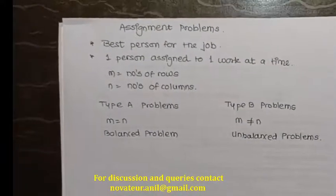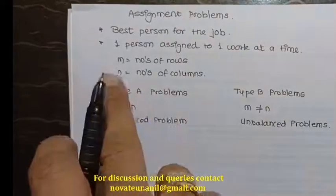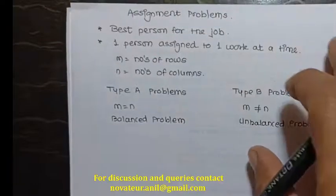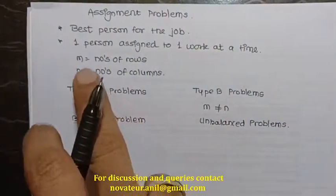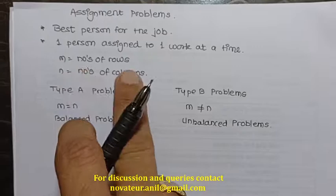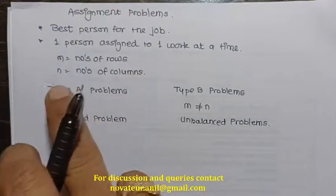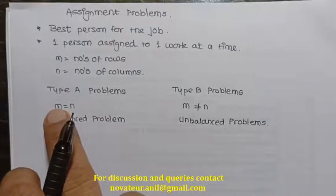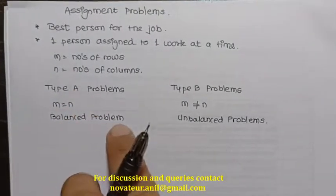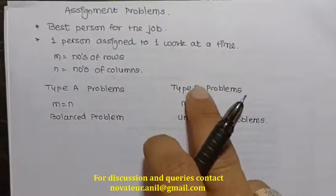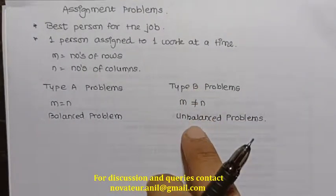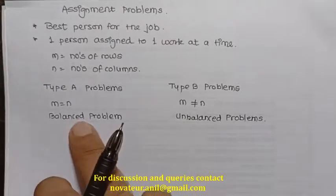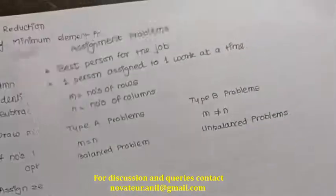To solve an assignment problem, we need to check two conditions. First, whether the given problem is in matrix form — that is, there are a number of rows and number of columns. We check whether the number of rows (m) is equal to the number of columns (n). When rows equal columns, it is called a balanced problem. When they are not equal, it is called an unbalanced problem. In this video, we are only going to talk about the balanced type.